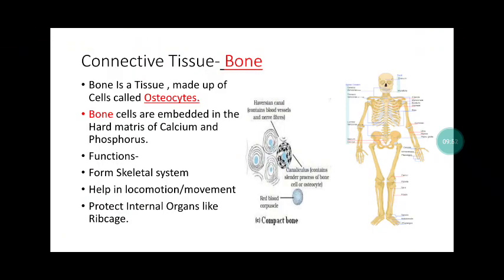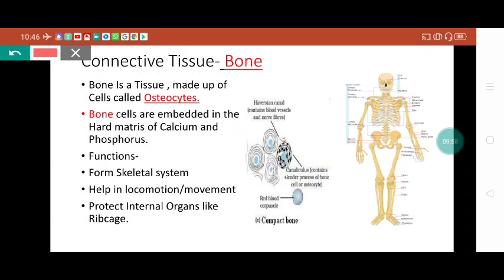This is the second connective tissue - bone. Very important for our body, it gives us mechanical strength. The bone is a tissue made up of special cells called osteocytes. 'Osteo' means bone and 'cyte' means cell, so osteocyte means cells which form the bone. The osteocyte cells are embedded in a hard matrix that contains high levels of calcium and phosphorus. That's why bones are very strong. Milk is very important for us, and vitamin D helps in the absorption of calcium and phosphorus from our diet.